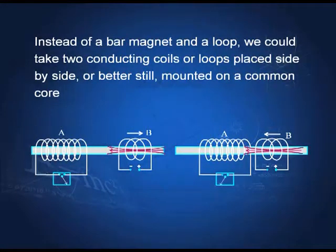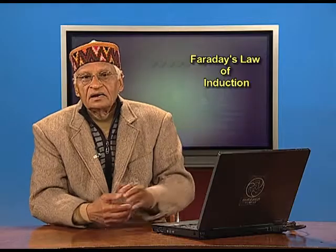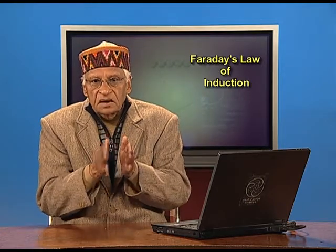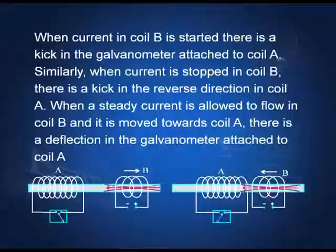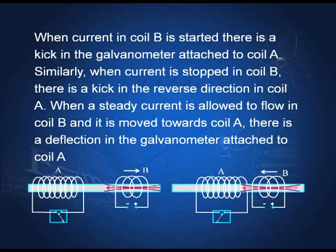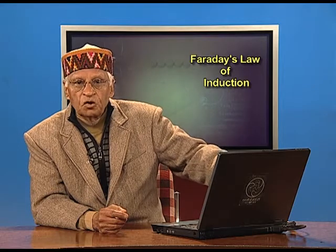Instead of a bar magnet, we can have two loops — a loop is equivalent to a magnetic dipole. We can have two loops of conducting wire mounted on the same common core. If we establish current in one loop, as soon as we establish the current a magnetic field appears. That means there is a change in the magnetic field through coil A and therefore there is a kick in the galvanometer. Similarly, when this coil is moved away, again there is a kick. When there is a steady current flowing, meaning the magnetic field is steady, then there is no current produced in the other coil.